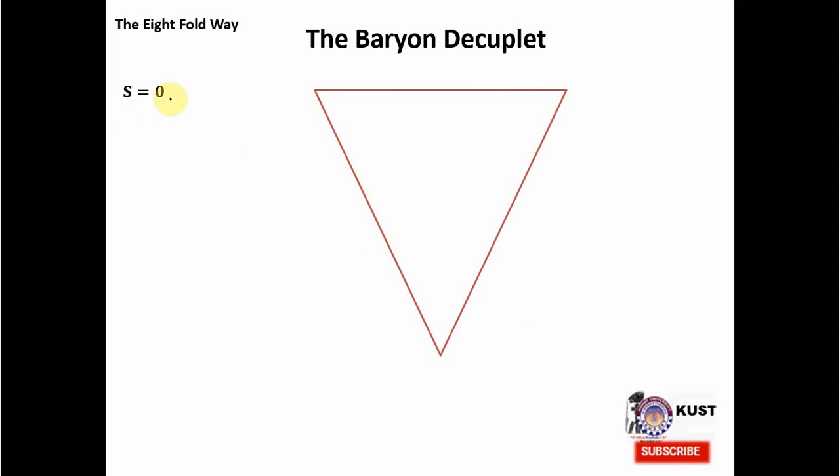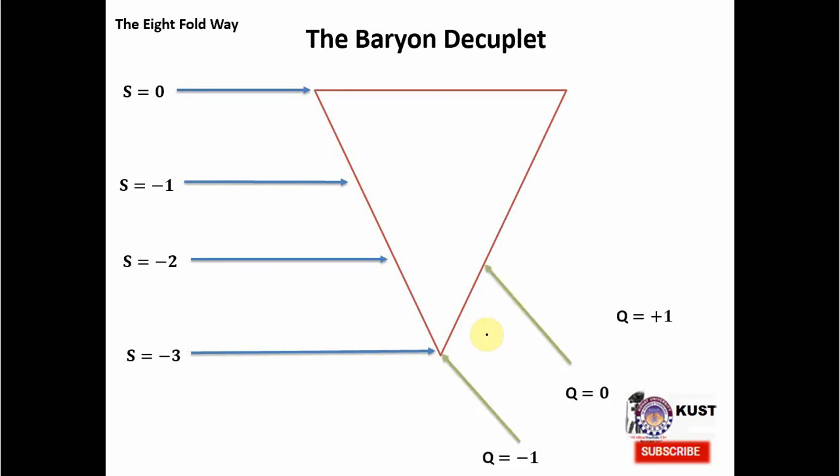First we start with S = 0 as we do in the baryon case, and this straight line will give every place on this straight line in front of this arrow the property of S = 0. If we go on, we can have arrows for S = -1, S = -2, and S = -3. And then we need to create slanted lines for the charges of the particles. For example, Q = -1 here, Q = 0, Q = +1, and Q = +2. And the next step is to put particles into their right places.